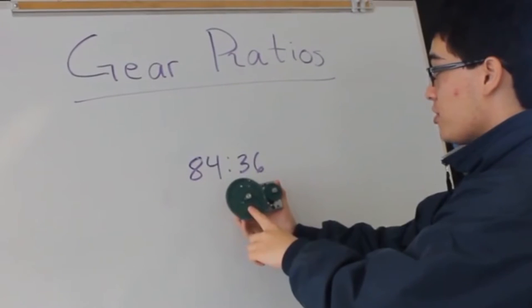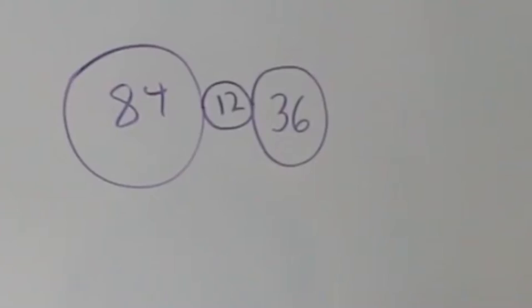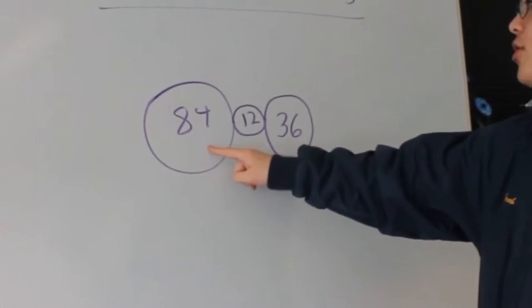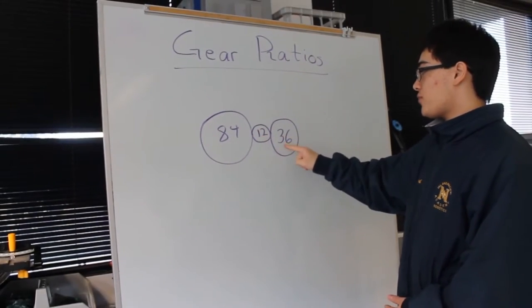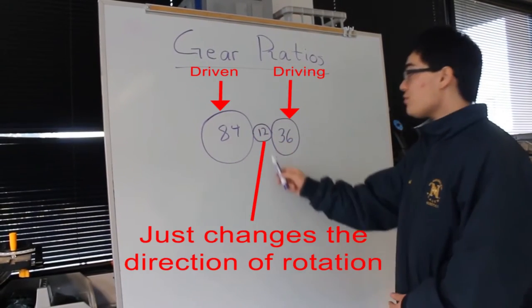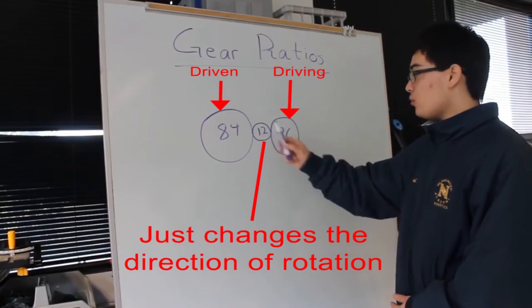In this gear ratio, we have an 84 tooth gear driving a 12 tooth gear, driving a 36 tooth gear. This gear in the middle is called an idle gear because it doesn't really do anything.